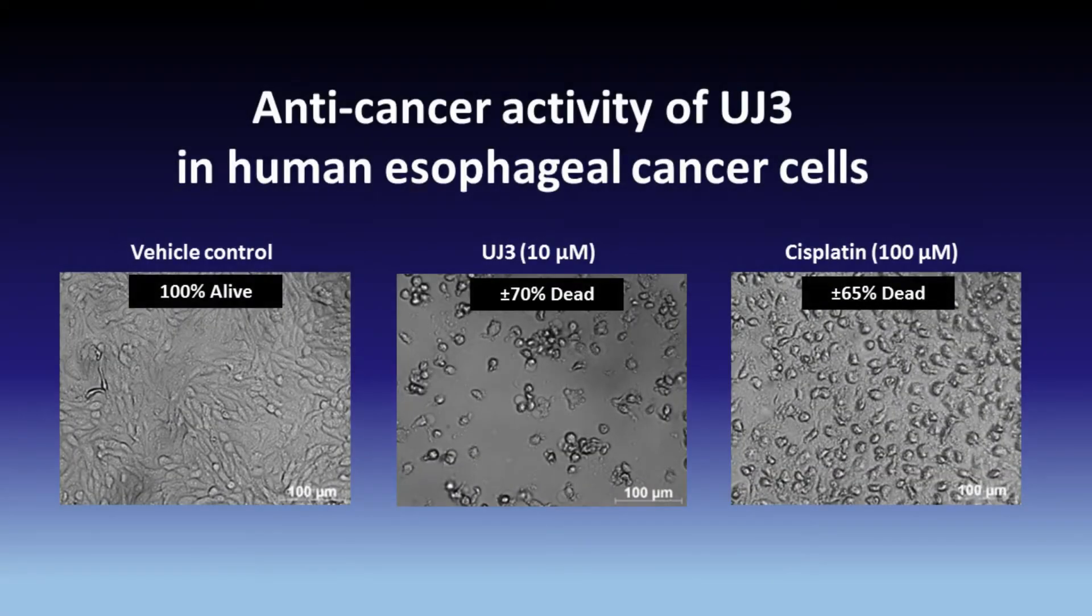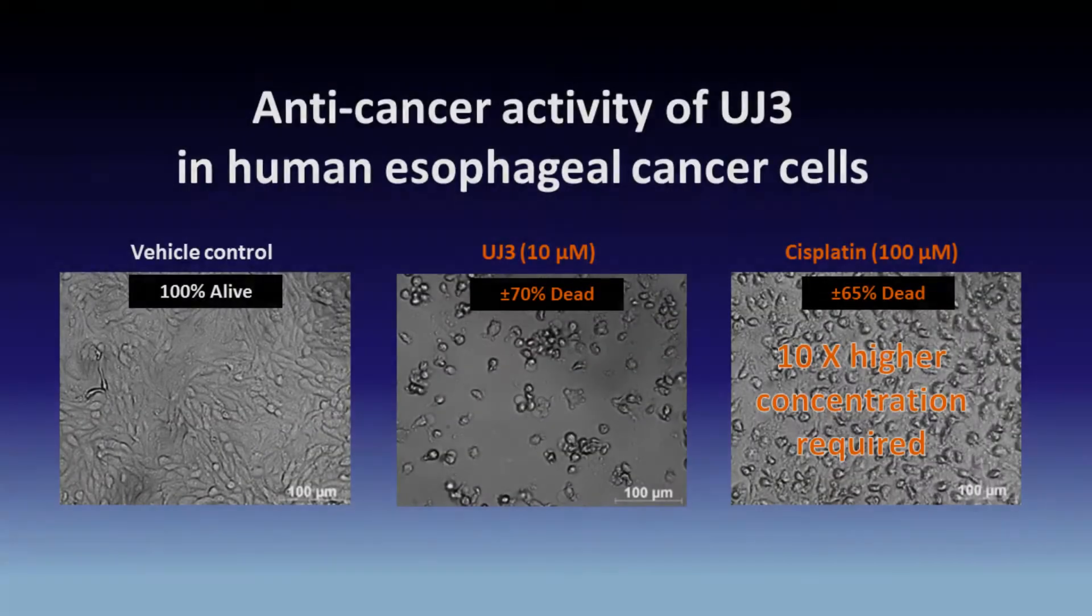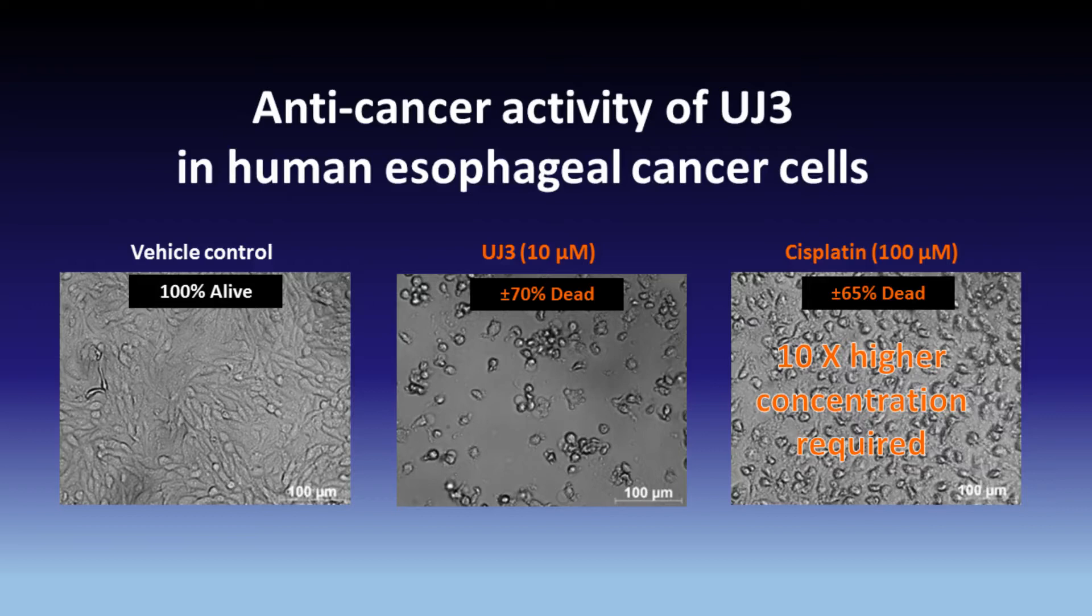On the right, we see similar structure changes in the cells treated with cisplatin. Here, more cells are visible, but by measuring metabolic activity, we see that 65% of the cancer cells are dead. This indicates that a 10 times higher concentration of cisplatin is required to induce a similar toxicity profile as UJ3.